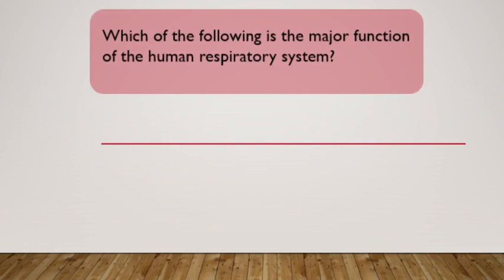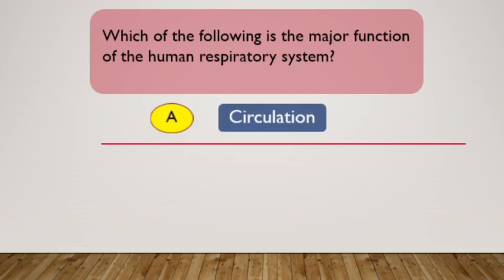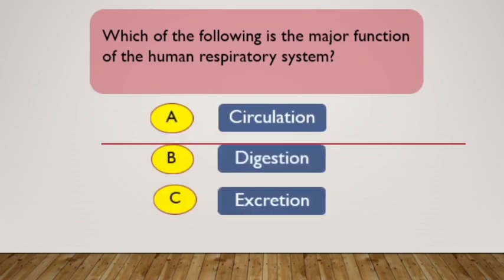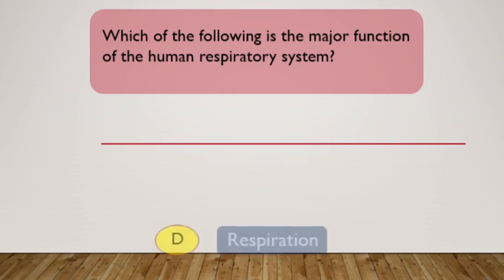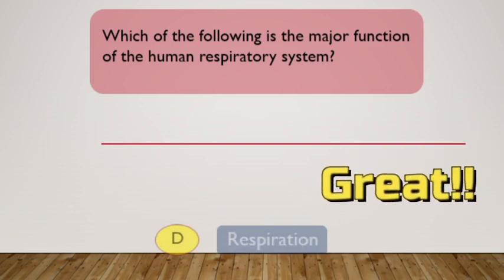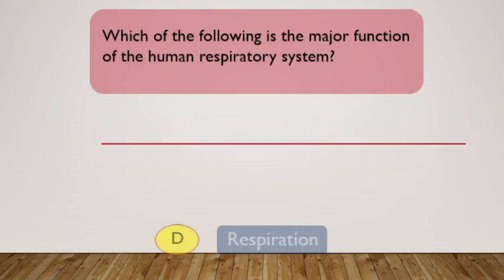Which of the following is the major function of the Human Respiratory System? A. Circulation, B. Digestion, C. Excretion, D. Respiration.